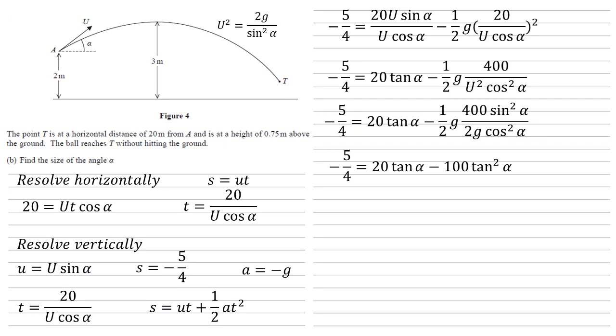We've got a quadratic in tan here. So if we get everything together on one side, I'm going to divide by the 5 over 4 to make everything into a whole number. So we get 80 tan squared alpha minus 16 tan alpha minus 1 equals 0. This factorizes to make 20 tan alpha plus 1 times 4 tan alpha minus 1 equals 0. So tan alpha is either minus a 20th or positive quarter. Using the inverse tan function, we get that alpha is equal to minus 2.86 or positive 14.